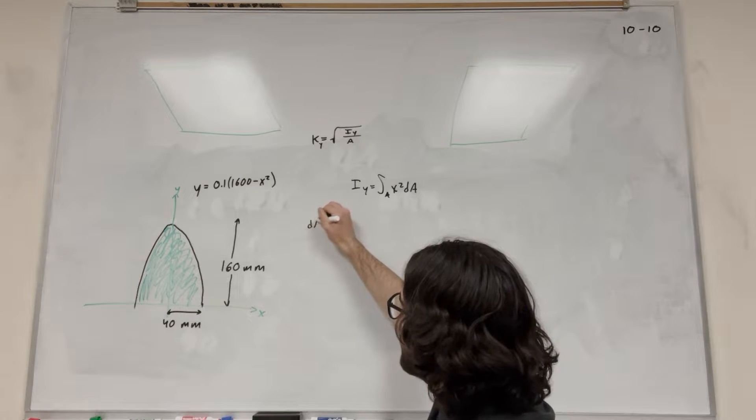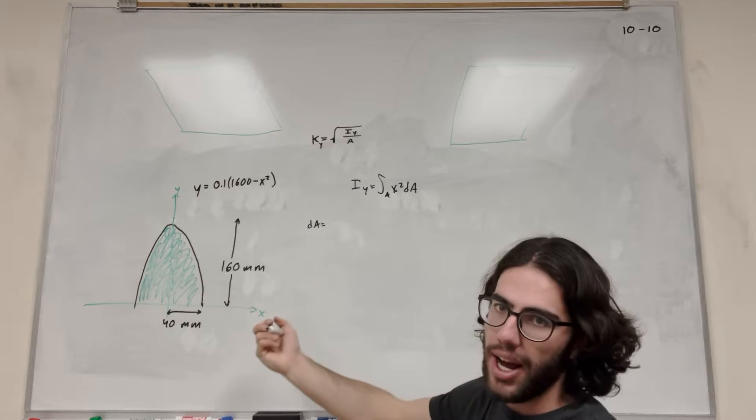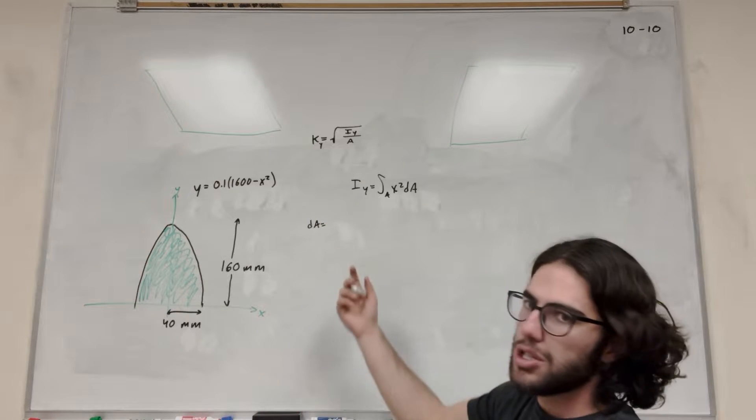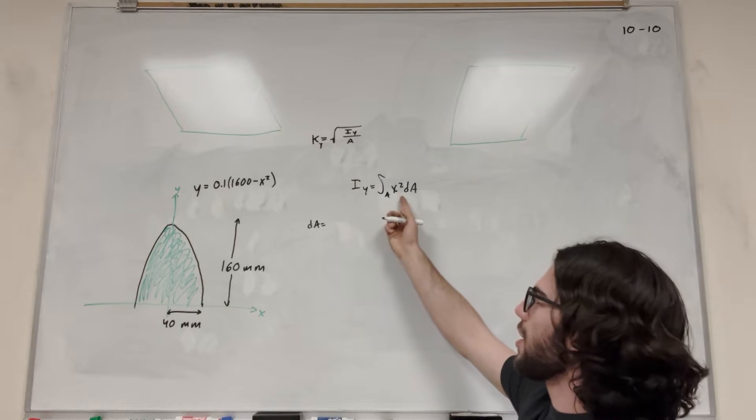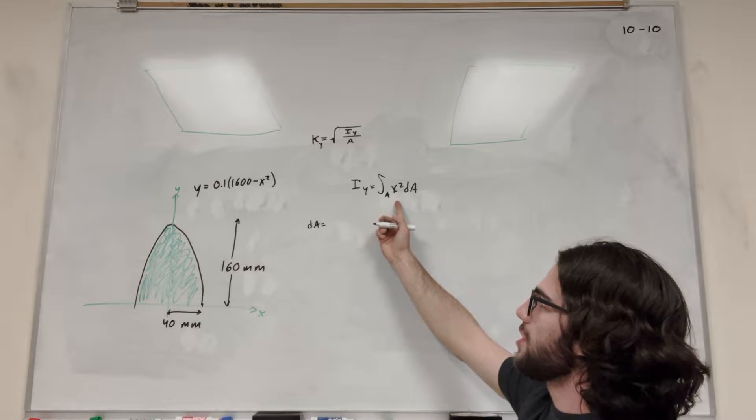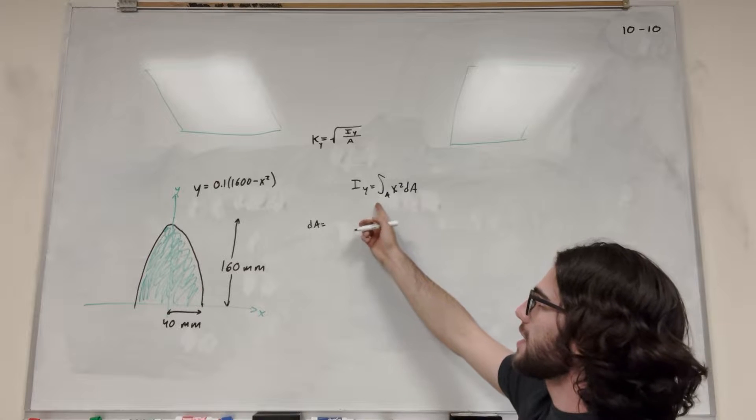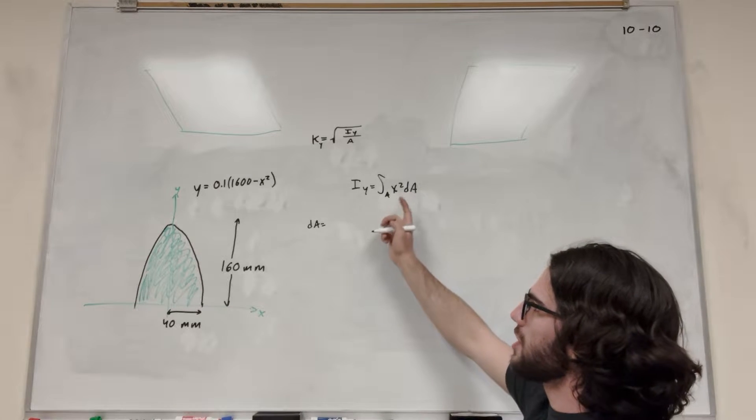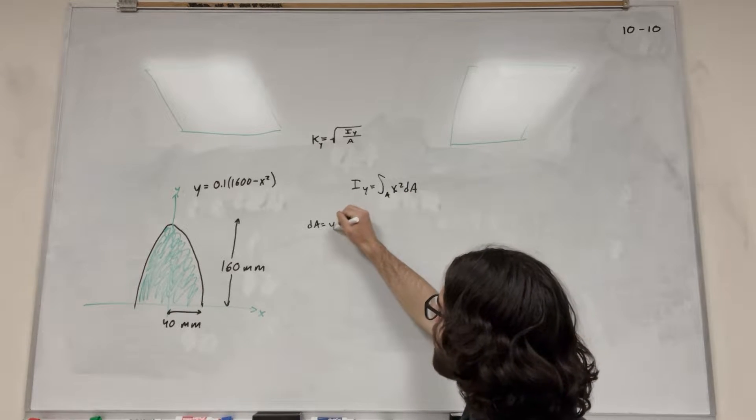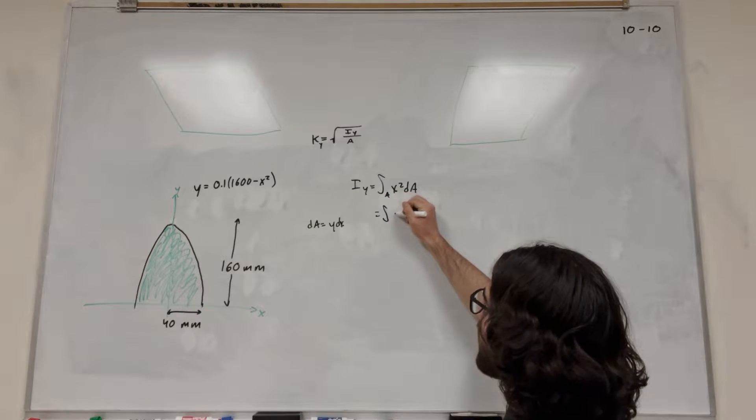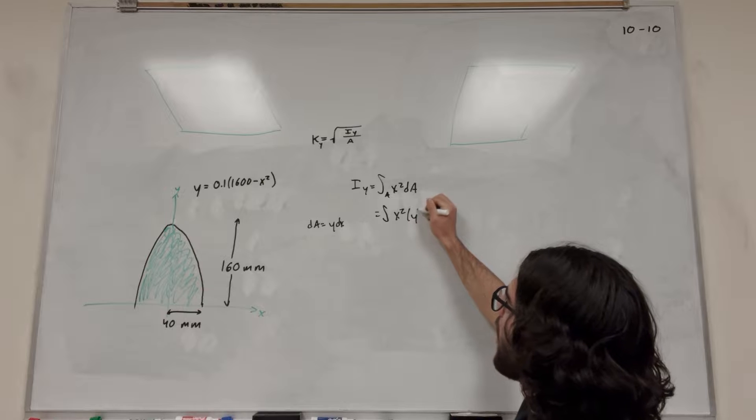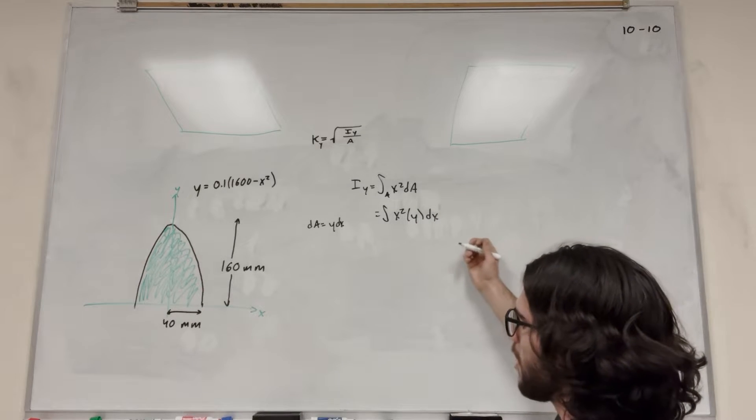So dA is equal to either x dy or y dx. So usually I like to choose y dx. The reason I do that is because we already have this x squared here. So if you choose y dx, then we're just going to integrate with respect to x. So we're going to say it's y dx. So let's put that right into our integral. So it's going to be over the area, x squared, y dx.